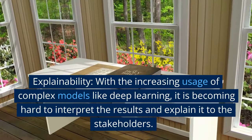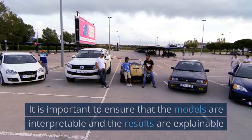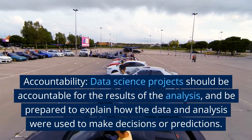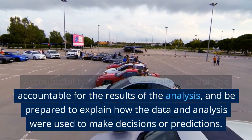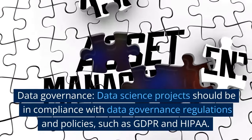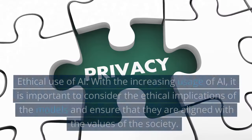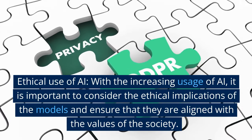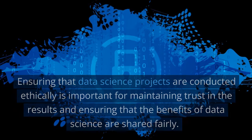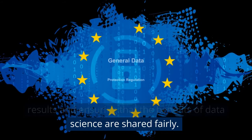Explainability: with the increasing usage of complex models like deep learning, it is becoming hard to interpret results and explain them to stakeholders. It is important to ensure that models are interpretable and results are explainable. Accountability: data science projects should be accountable for the results and be prepared to explain how the data and analysis were used to make decisions. Data governance: projects should comply with regulations and policies such as GDPR and HIPAA. Ethical use of AI: it is important to consider the ethical implications of AI models and ensure they are aligned with the values of society.